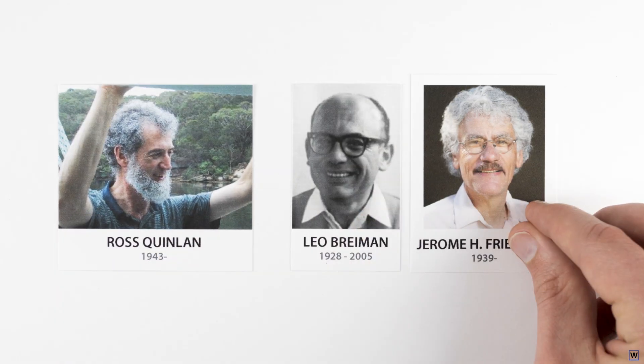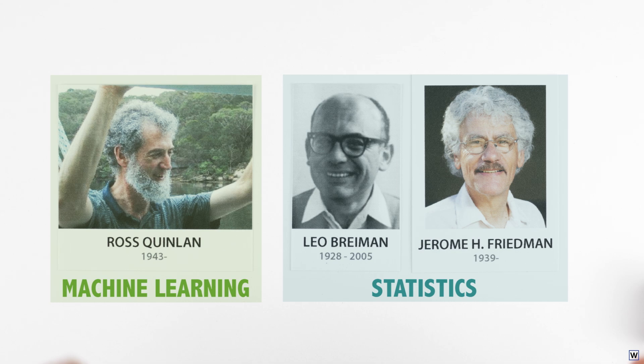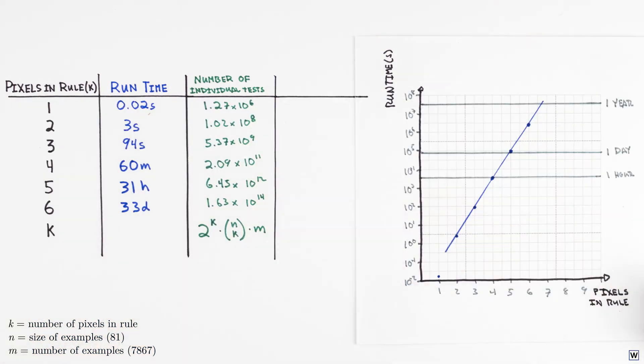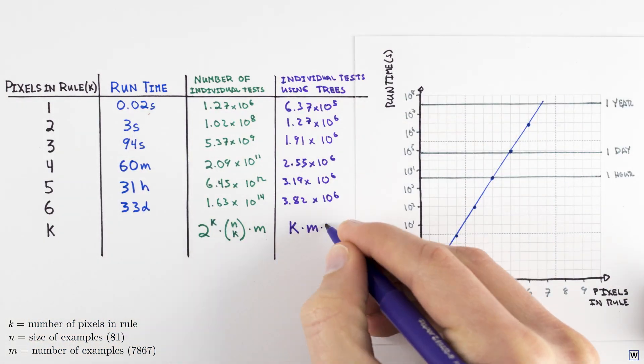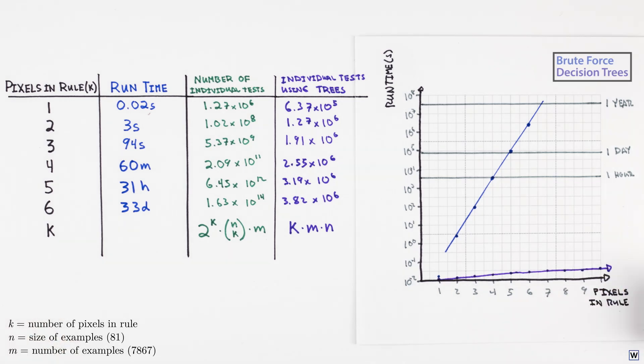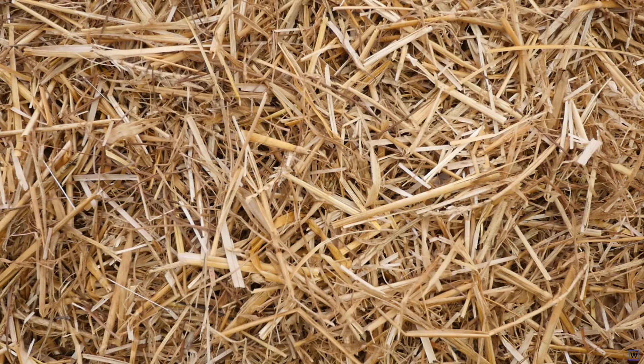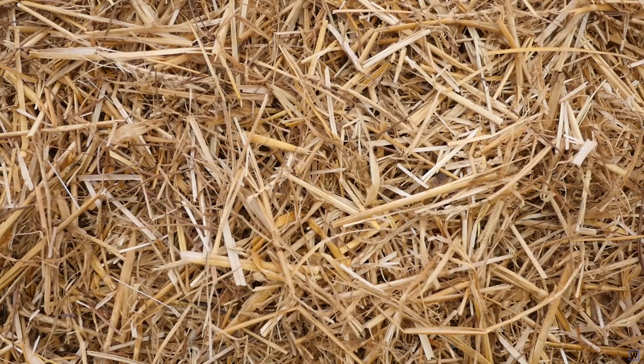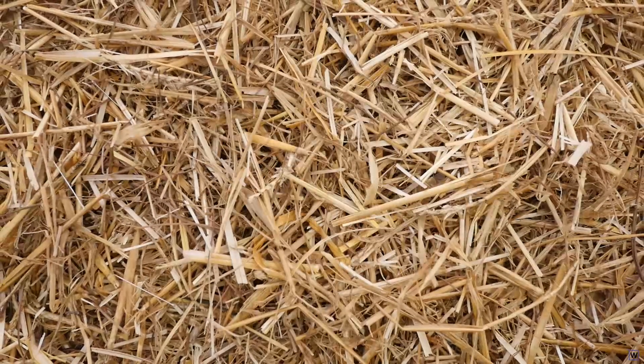Last time, we left off wondering how a few machine learning and statistics researchers in the 1970s and 80s were able to so dramatically outperform our brute force approach to finding the best rule to identify fingers and images. How is it that these researchers were able to find a needle in a haystack without searching through all the hay?